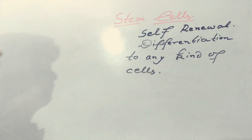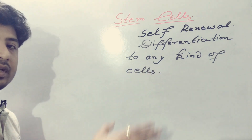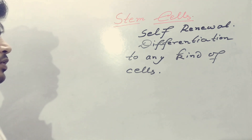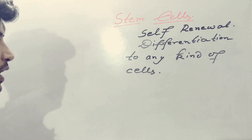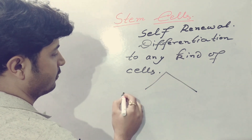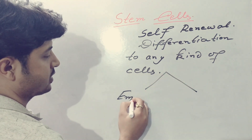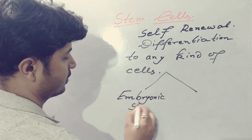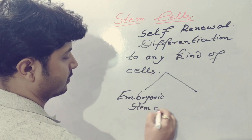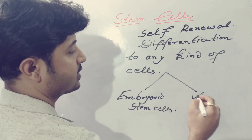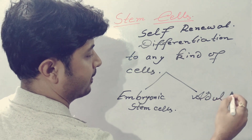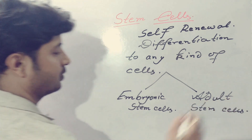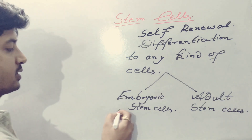The differentiation to any kind of types is what makes them stem cells. Now stem cells are of two types: the first one is embryonic stem cells, and the other one is adult stem cells.